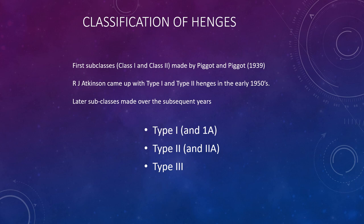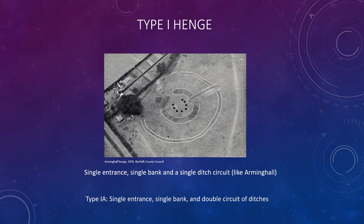First comes the Type 1 henge. This is a henge that has a single entrance with a single bank and a single ditch circuit, like Arminghall here in the photograph, which was excavated in the earlier 1930s. Later on, the Type 1a subclass was made to fit in henges which had a single entrance and a single bank but had a double circuit of ditches.